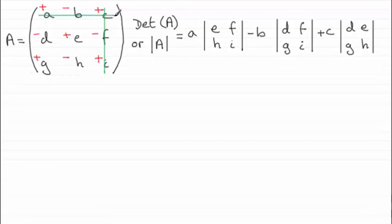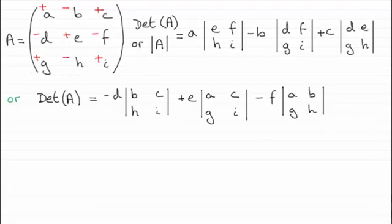Now, it's not the only way, as I said earlier. There's many other ways that we can do this. For instance, suppose we were to work across this row here, the d, e, and f. Then the method for working out the determinant would be this.